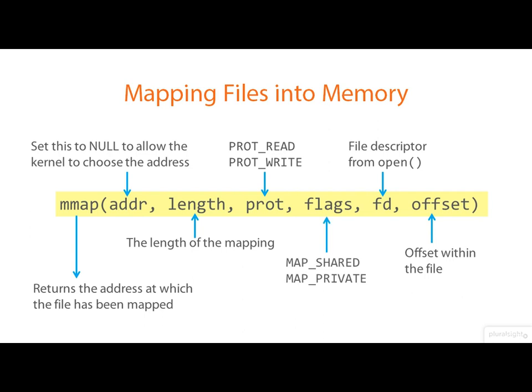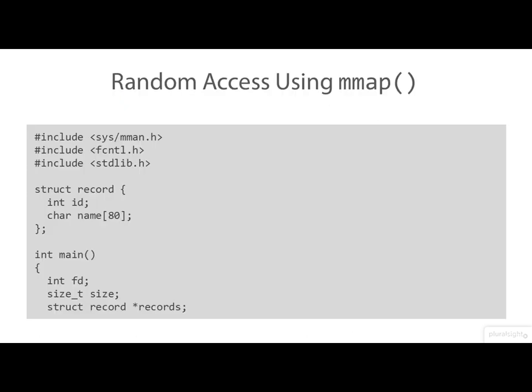Finally, the flags argument specifies whether you plan to share the mapping with other processes — so that updates to the mapped region are immediately visible to everyone — or whether you want to keep the mapped region to yourself.